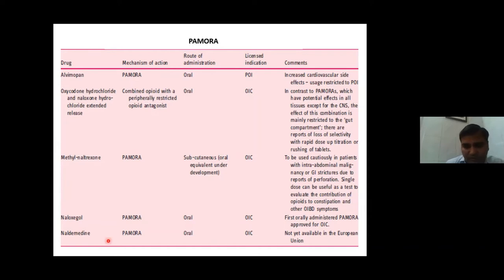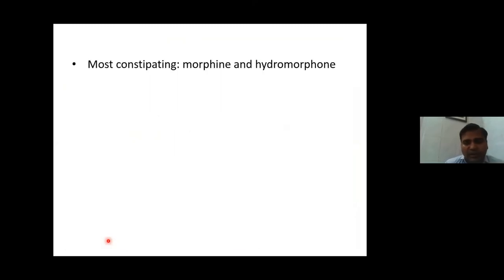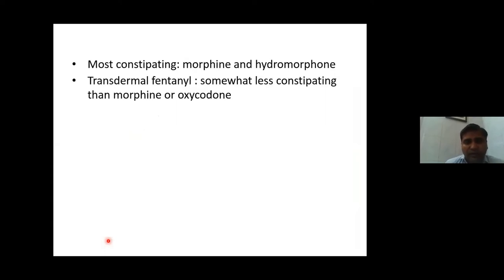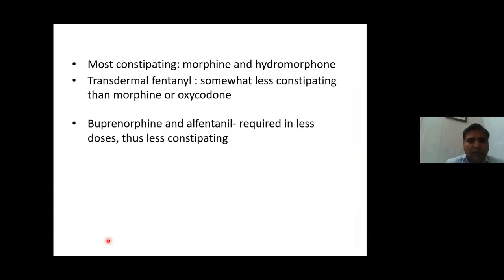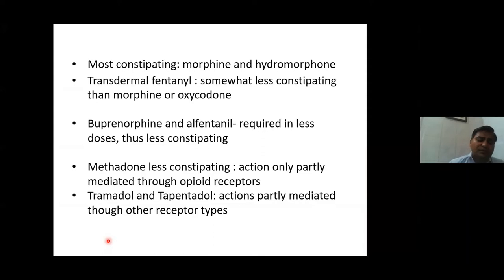The most constipating opioids are morphine and hydromorphone. Transdermal fentanyl is less constipating than morphine. Buprenorphine and alfentanil require very low doses and are less constipating. Methadone has less constipating action because its effect is only partly mediated through opioid receptors — it acts through various receptors — and has been the preferred drug when switching from morphine, hydromorphone, or fentanyl in patients with OIC. Tramadol and tapentadol, for patients with moderate pain, have lower rates of constipation.